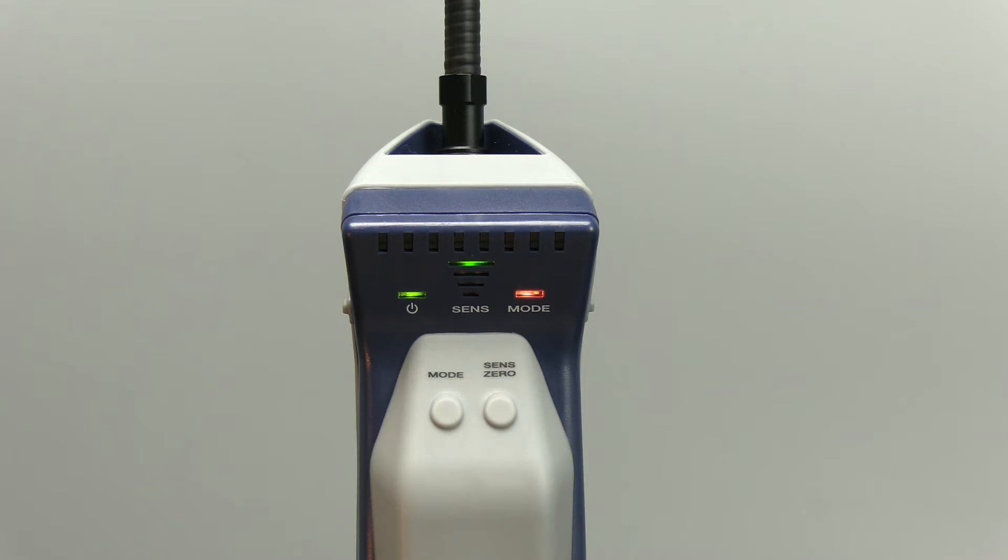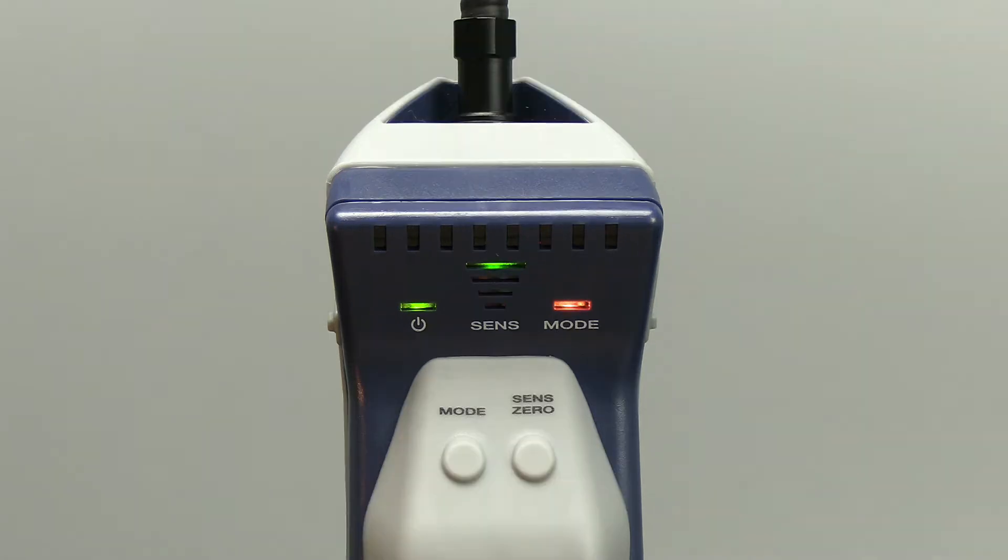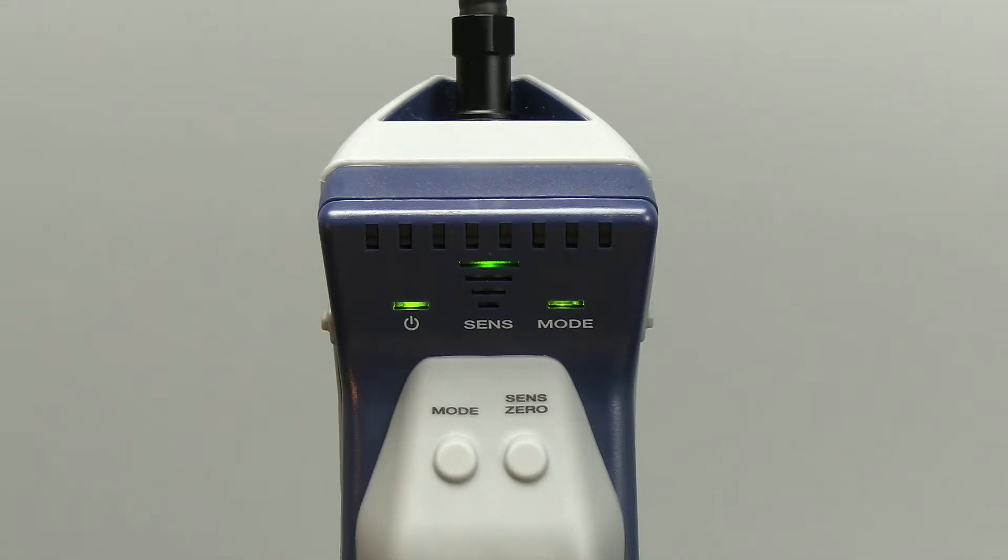AST 200 IR will automatically sense the sensor type and the mode indicator will change color. Orange indicates that you're using the standard sensor and green indicates the CO2 sensor is installed.